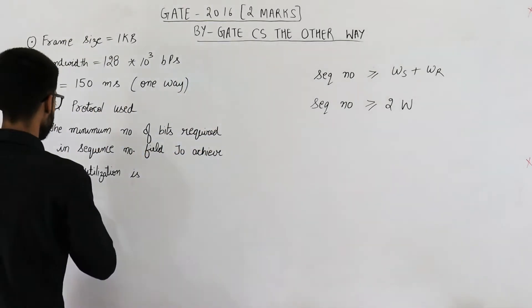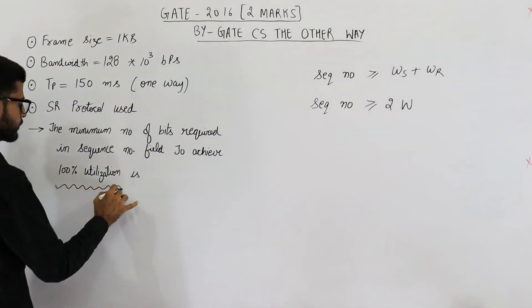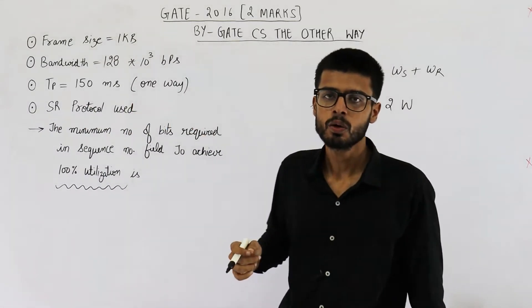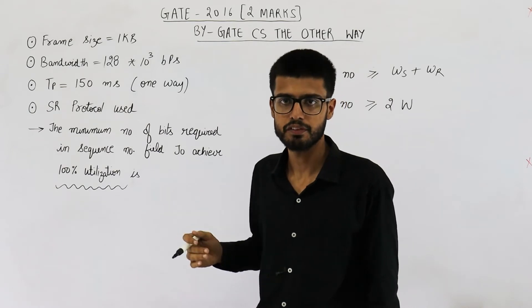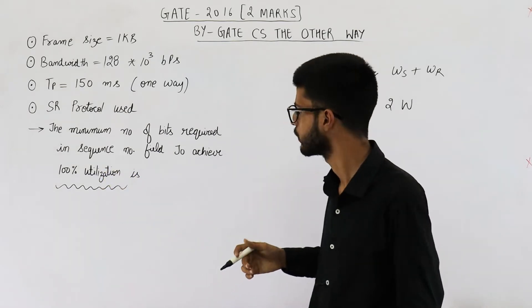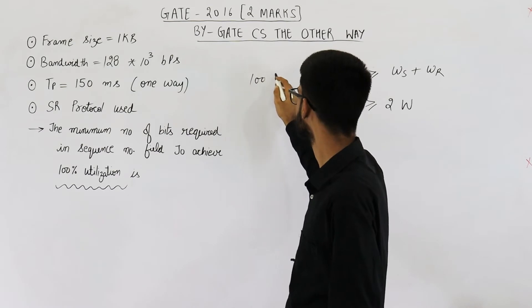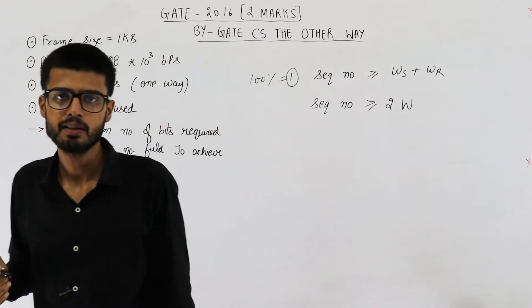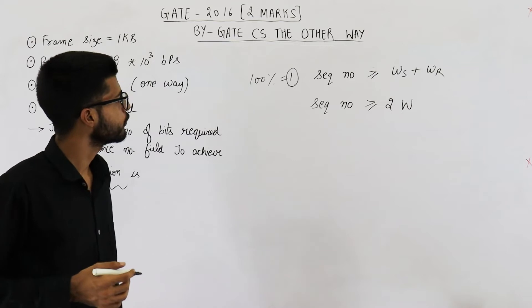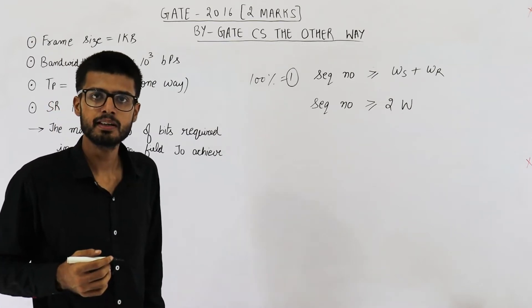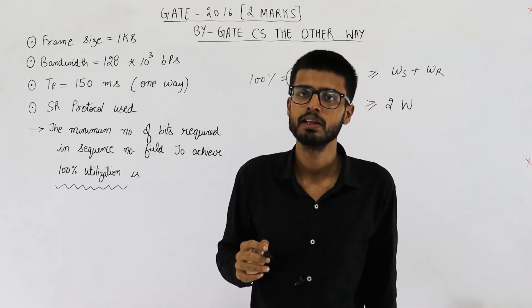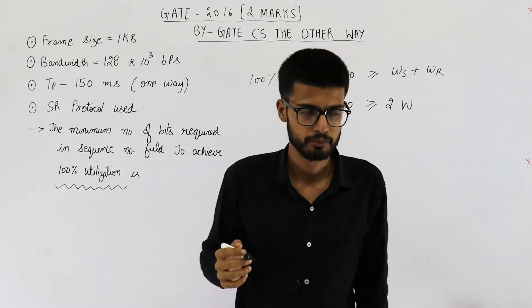They are also saying we want 100% utilization. That is the link utilization must be 100%. That means they are talking about 100% efficiency which is equal to 1. You already know that value of efficiency can lie between 0 to 1. So for 100% efficiency in case of sliding window protocol, the condition is sender window size must be equal to 1 plus 2a.